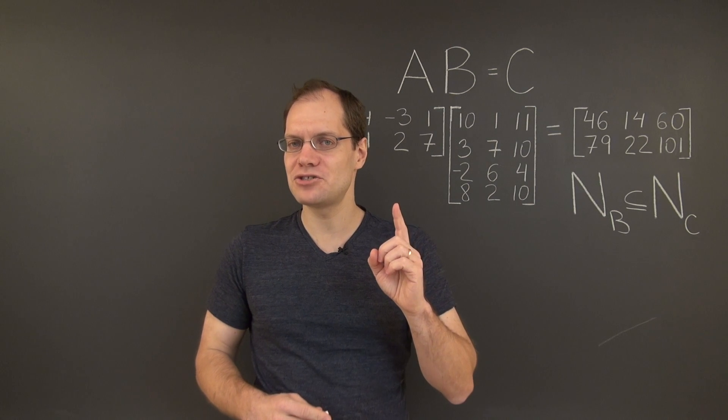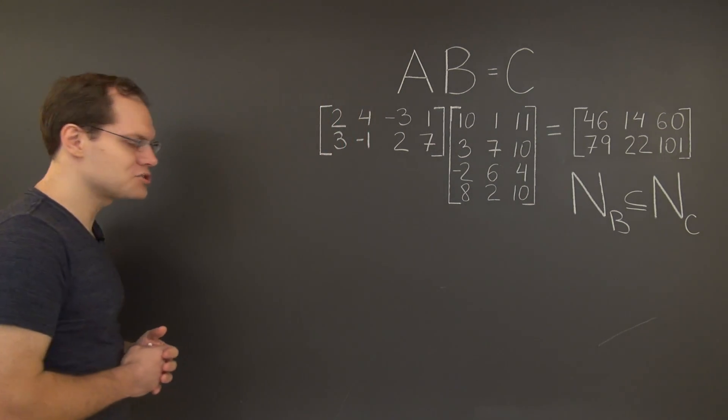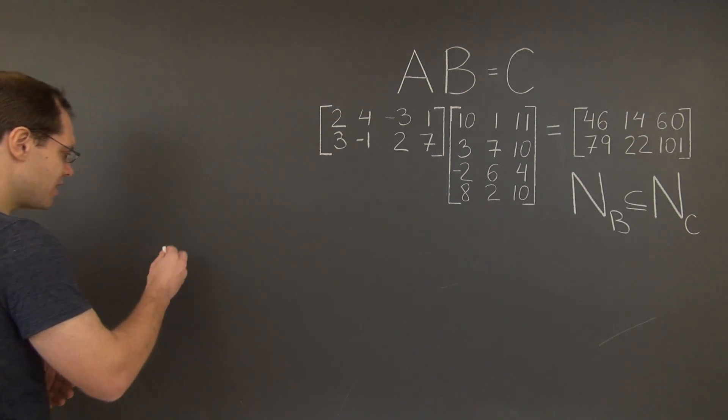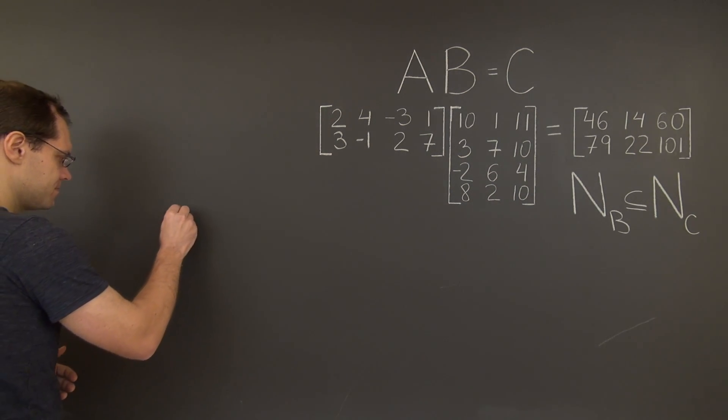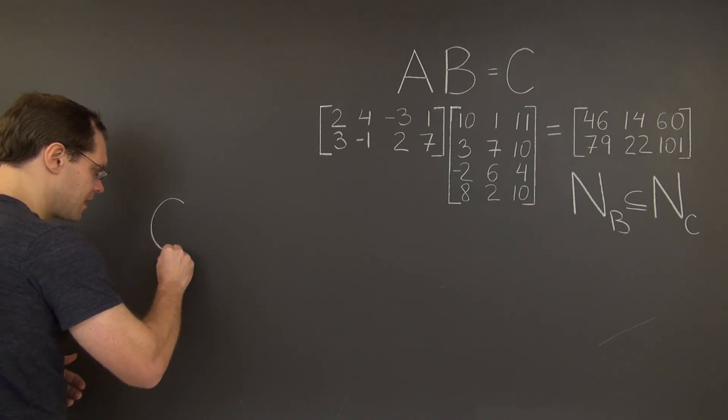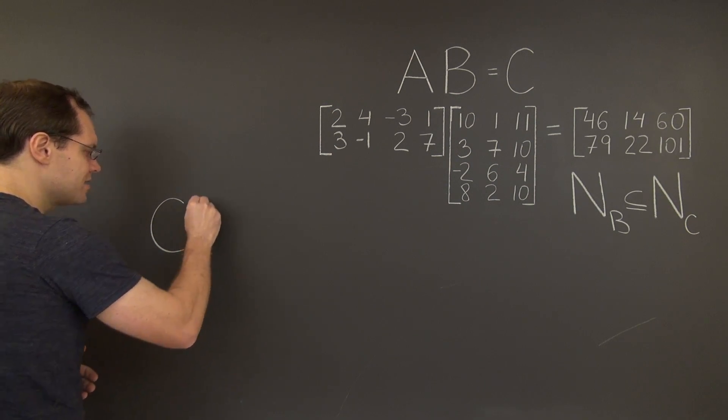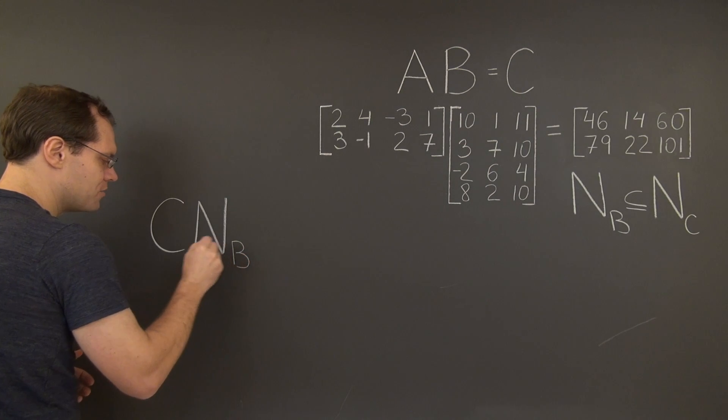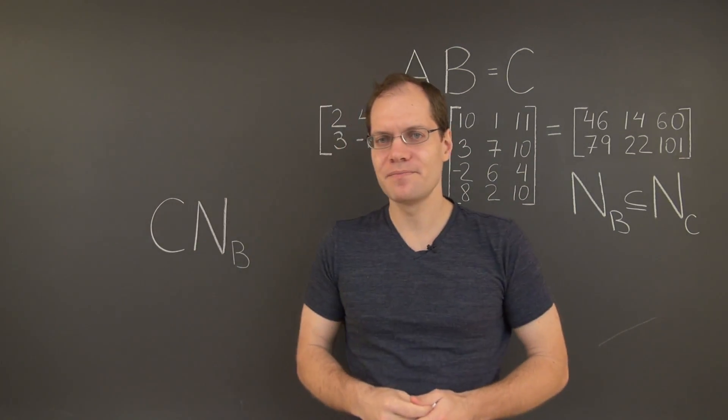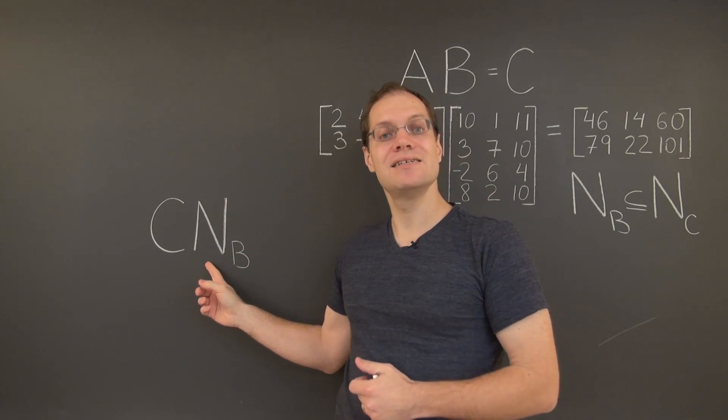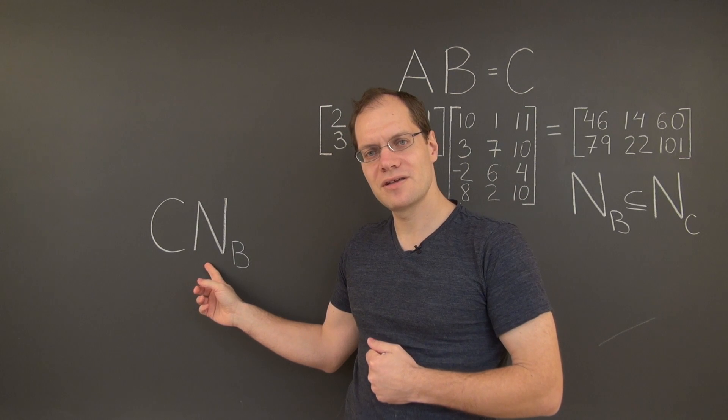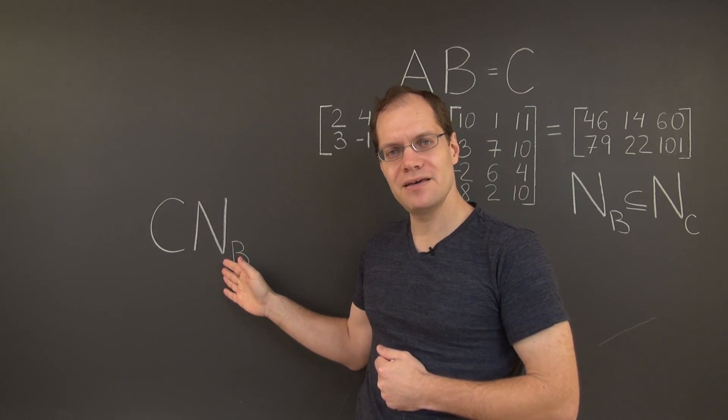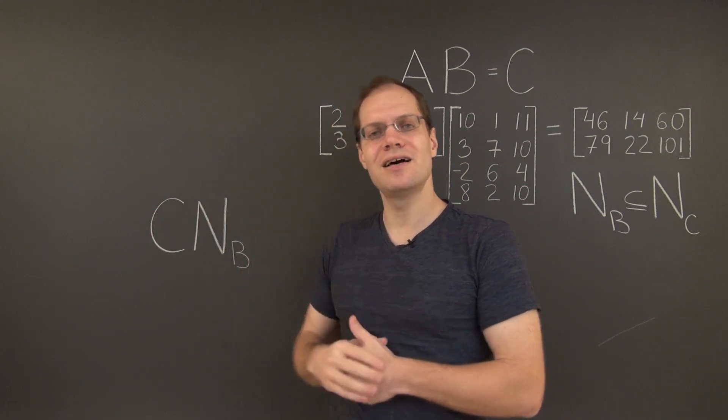Let's see. Let's multiply the matrix C by the matrix representing the null space of B. This product is C with the matrix representing the null space of B. Now, as we discussed before, if this product is 0, the 0 matrix, it will show that every element of the null space of B is also in the null space of C.